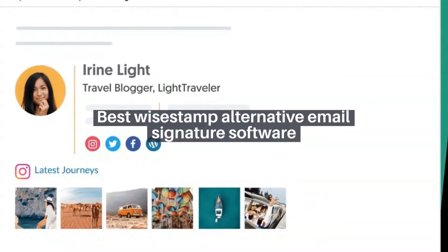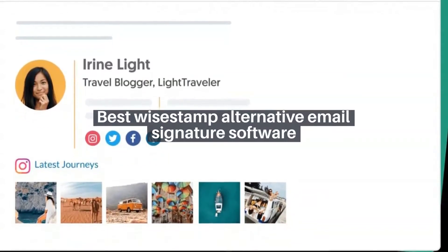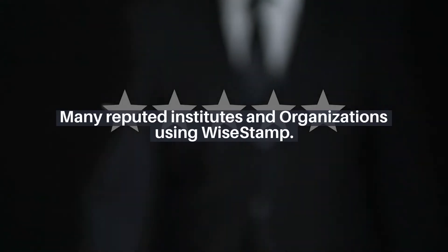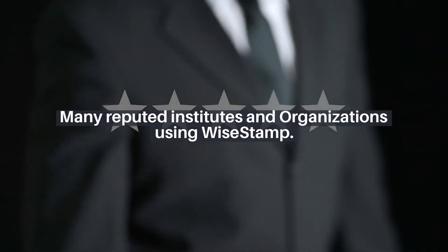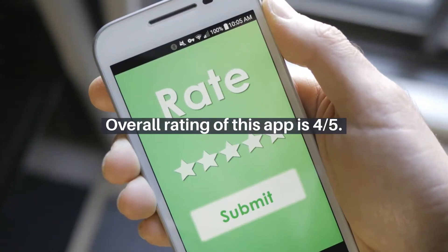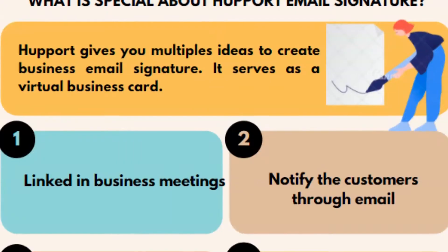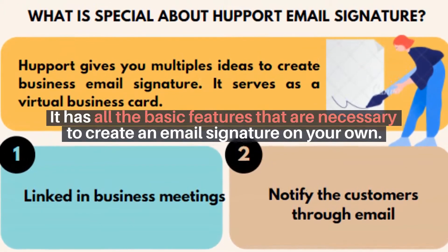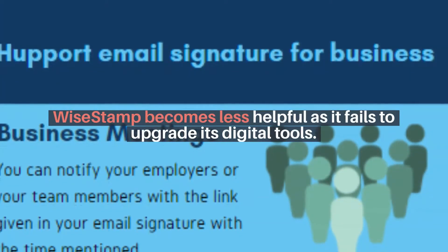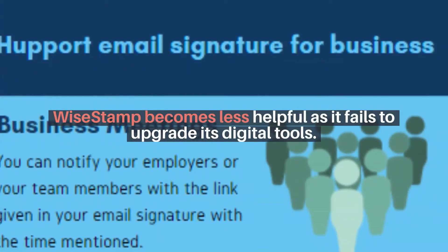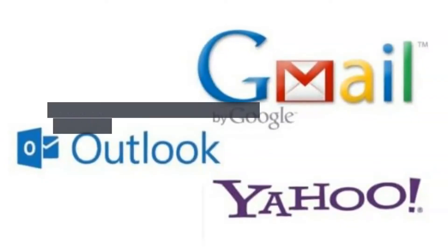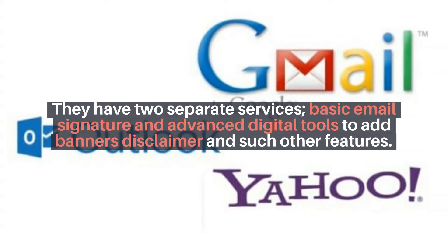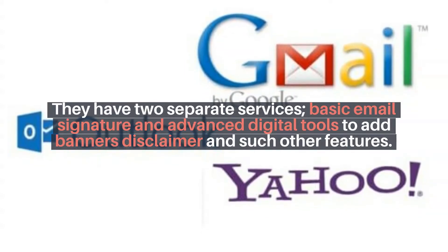Best Vizestamp alternative email signature software: Hapot. Many reputed institutes and organizations are using Vizestamp. The overall rating of this app is 4 out of 5. It has all the basic features necessary to create an email signature on your own. However, Vizestamp becomes less helpful as it fails to upgrade its digital tools. They have two separate services: basic email signature and advanced digital tools to add banners, disclaimers, and such other features.